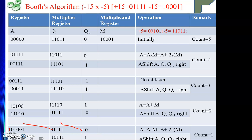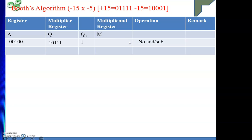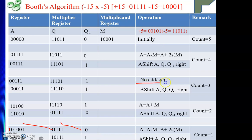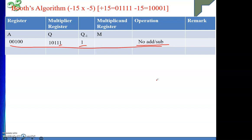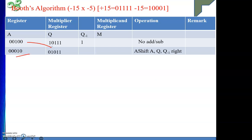Count is 1, still not 0, so one more step. Right now Q0 is 1 and Q minus 1 is also 1 — two consecutive bits are the same, so no addition or subtraction is needed. During exam time, you need not even show this line; simply perform the arithmetic shift right. After the arithmetic shift right, the result is triple 0, triple 0, 1, 0. My count value is now 0, so I stop.